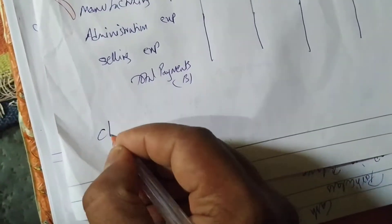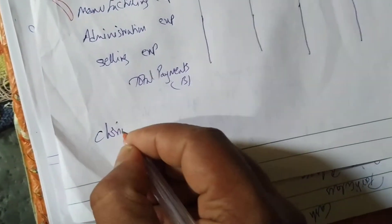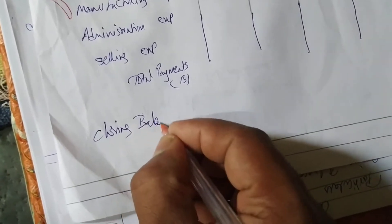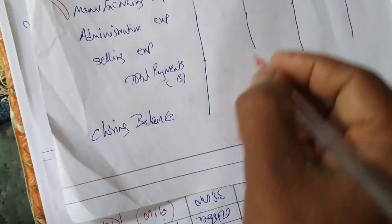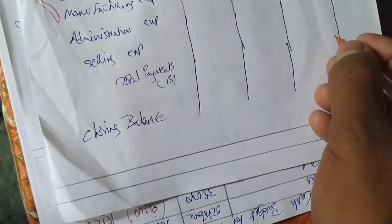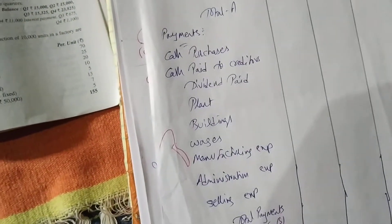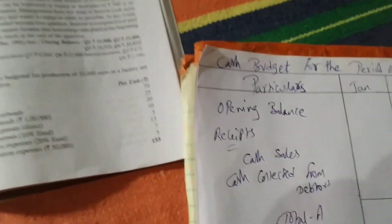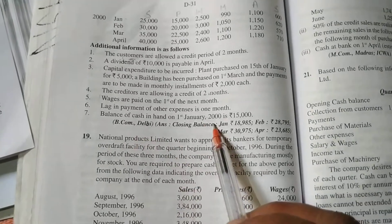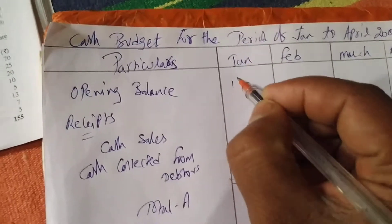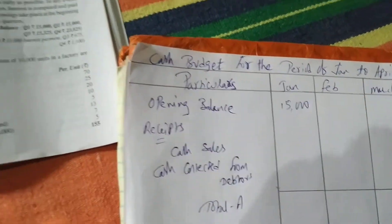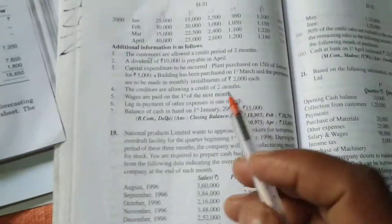Then we write the closing balance. We have written everything given in the question. Let us continue. The opening balance in the month of January is 15,000, so we write 15,000 as the opening balance.